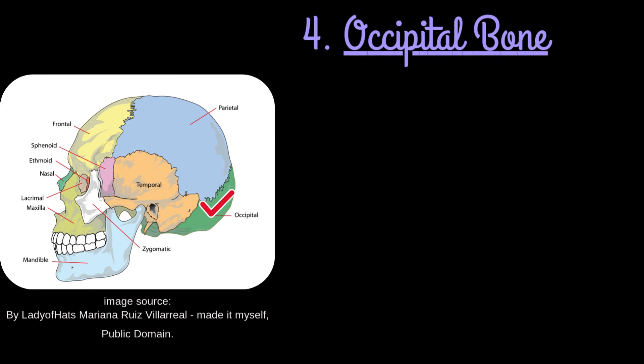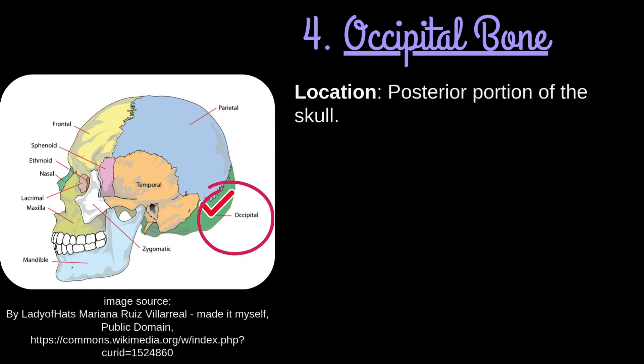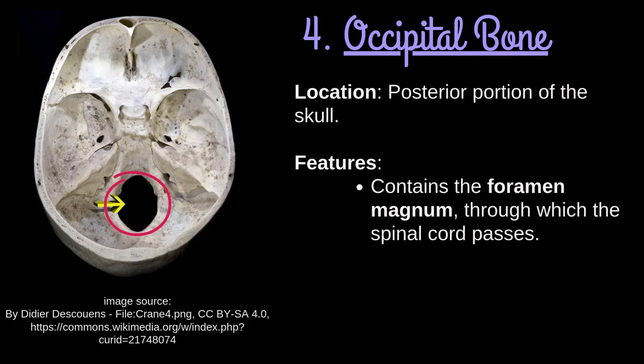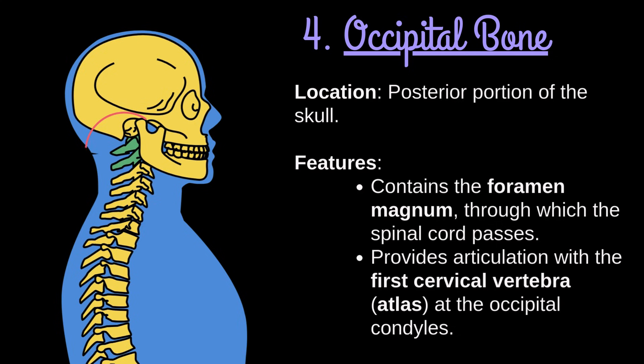Number 4: Occipital bone. It forms the posterior portion of the skull. It contains the foramen magnum, through which the spinal cord passes. It provides articulation with the first cervical vertebra, the atlas, at the occipital condyles.